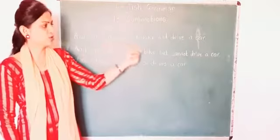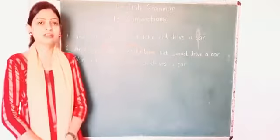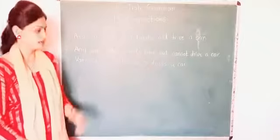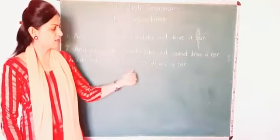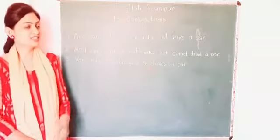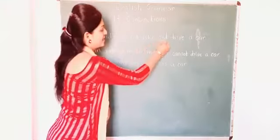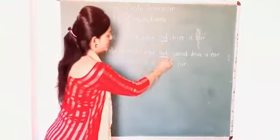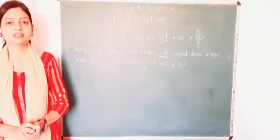First example: Anuk can ride a motorbike or drive a car. Second: Anil can ride a motorbike but cannot drive a car. Third: Vani rides a motorbike or drives a car. So students, see in these sentences — and, but, or. These are the conjunctions.